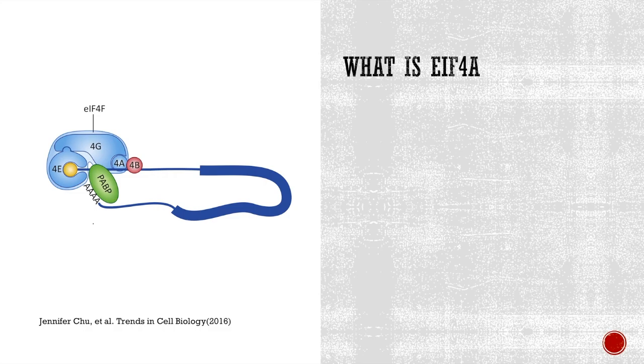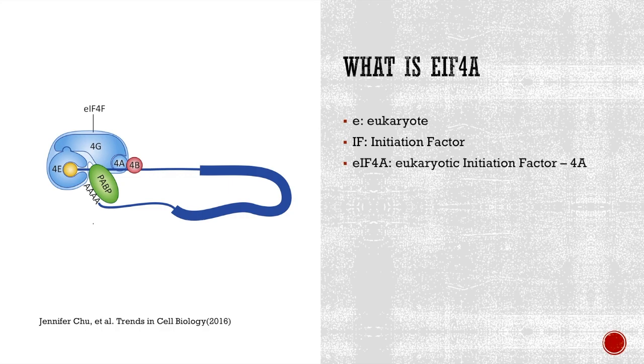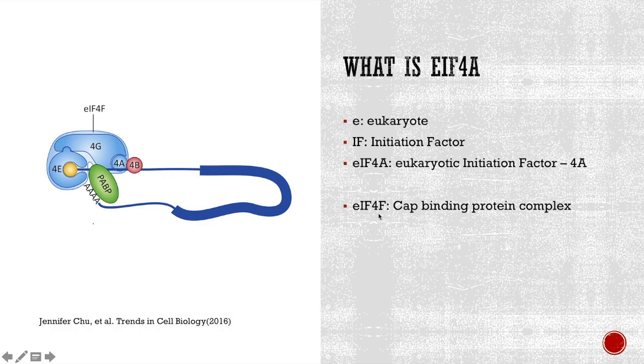So what is EIF4A? E stands for eukaryotes. IF stands for initiation factor. Therefore EIF4A stands for eukaryotic initiation factor 4A. It is part of the cap binding protein complex, which is also called EIF4F.